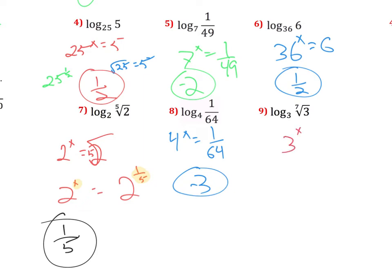And number 9, 3 to what power is the same as the 7th root of 3? Well, the 7th root is the same as saying 3 to the 1 7th power. So, that will just be 1 7th is my answer.